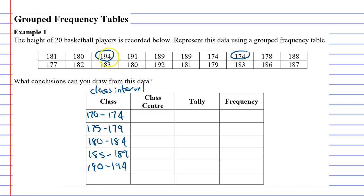Now you also notice class center. Class center just means what is the middle number between 170 and 174, so in this case it's 172. Now if you're not sure how to calculate that, what you can do is add the two numbers up, 175 plus 179, put it in brackets and then divide your solution by two.